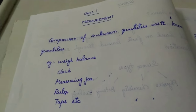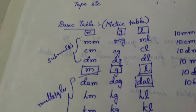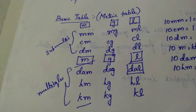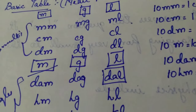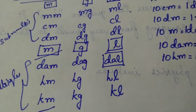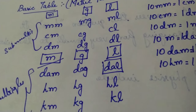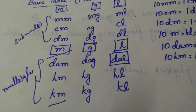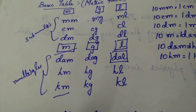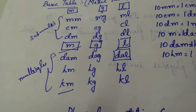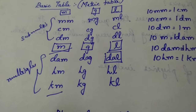The basic metric table — like meter, gram, liter. We have millimeter, centimeter, decimeter, meter, decameter, hectometer, kilometer. Likewise, in gram and liters we also express quantities. I will explain the conversion table — that is, converting from meter to millimeter and millimeter to centimeter — everything I will explain later.